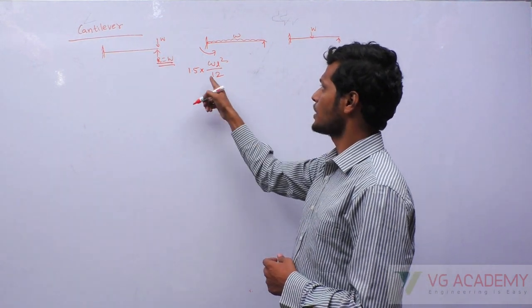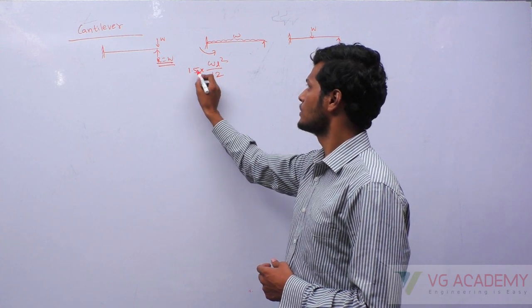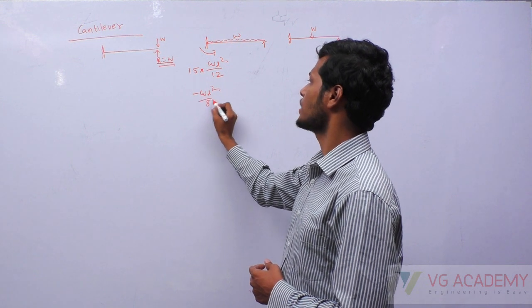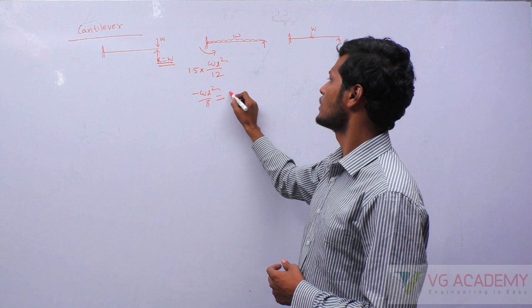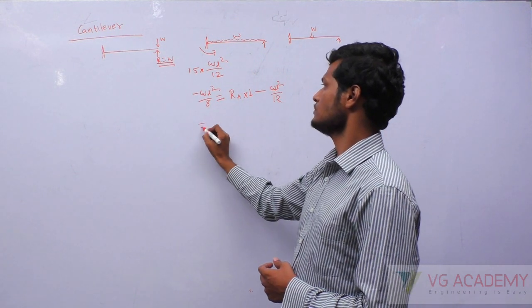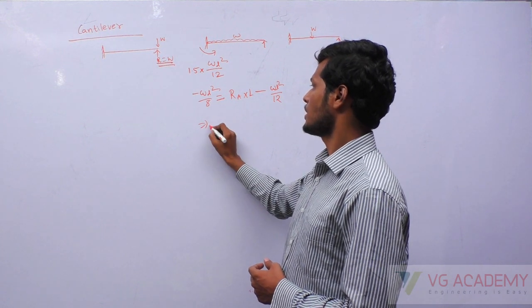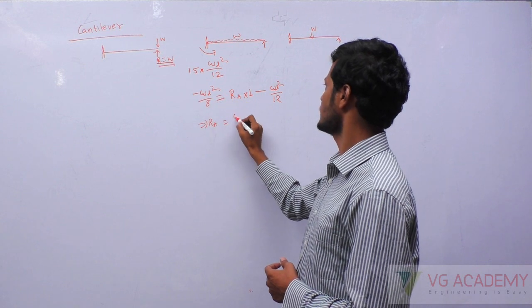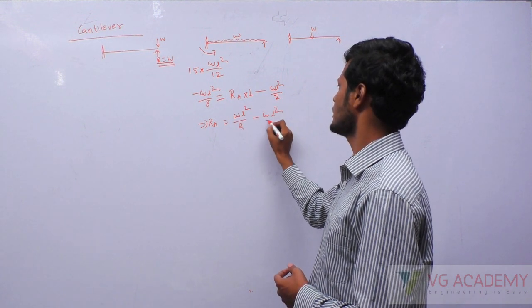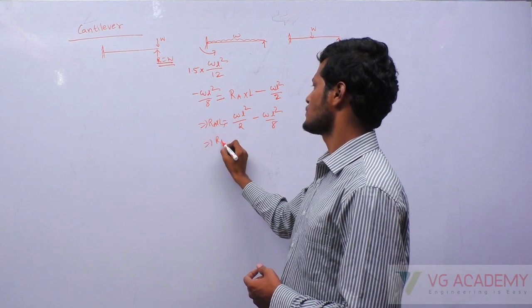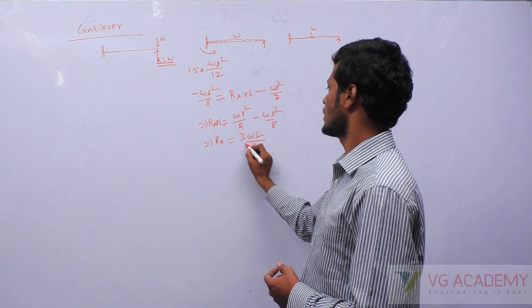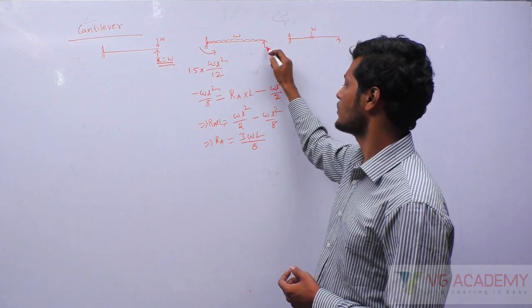Now, how to find this reaction? We already know the moment, which will be 3/2 times. So WL²/8 moment value is equal to R_A into L minus WL²/2. This gives WL²/8. Sending this across: WL²/2 minus WL²/8 equals R_A into L. So R_A equals 5/8 WL, and the reaction at the other end will be 3/8 WL.